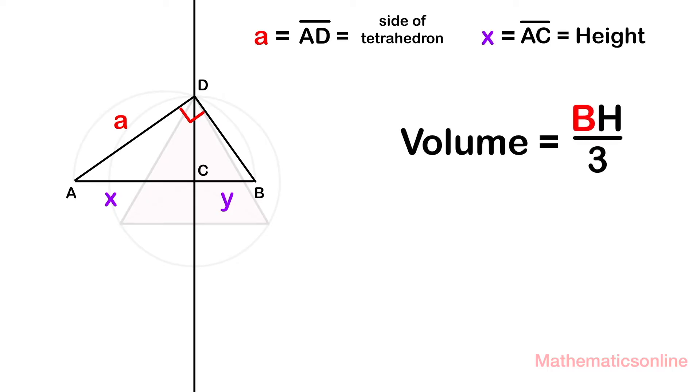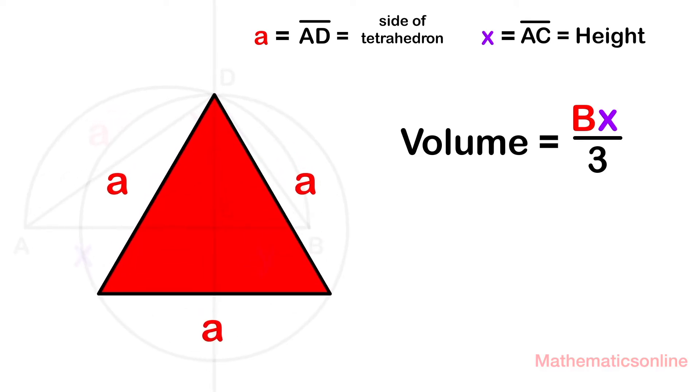Let's go ahead and substitute x in for h. And let's concentrate on the base. The base is an equilateral triangle with all sides the same length. To find the area, we need to multiply the base of the triangle times height divided by 2.